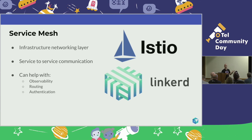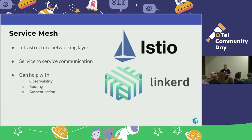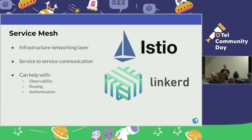Service mesh is a networking component, part of your infrastructure, that is responsible for networking — mostly service-to-service communication. When your service needs to communicate with another service, it goes through the mesh. I'm going to look at three specific things the service mesh can help you with: observability, routing, and authentication.